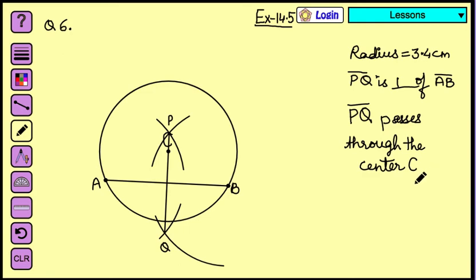So this is what the question was asking us to do. It was asking to draw a circle, construct a circle of radius 3.4 cm. Next it was asking us to just randomly draw a chord AB and then make a perpendicular bisector. So we have drawn AB, then by using compass we have drawn the arcs on both the sides, and after joining them we have drawn the perpendicular bisector.